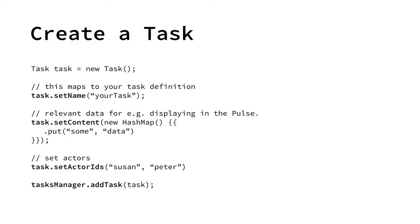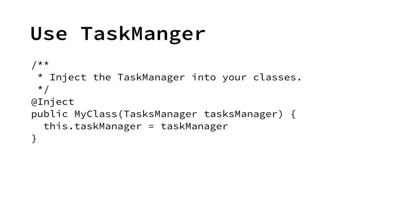Just a short summary of how to create a task: instantiate the task POJO, set a name on it that maps to your task definition inside your module, put some content on it, set possible actors or assignees, and add it using the task manager. The task manager is usually injected into your class. It makes sure the task is always updated when you move from one state to another, and it also notifies the whole system about changes to each task via the Magnolia system event bus.